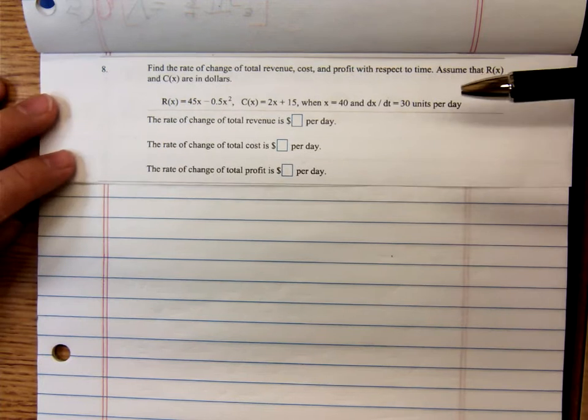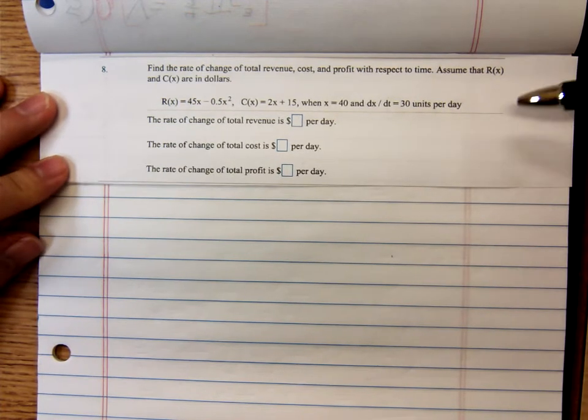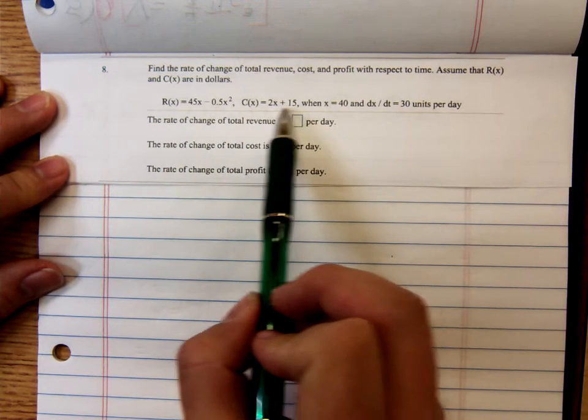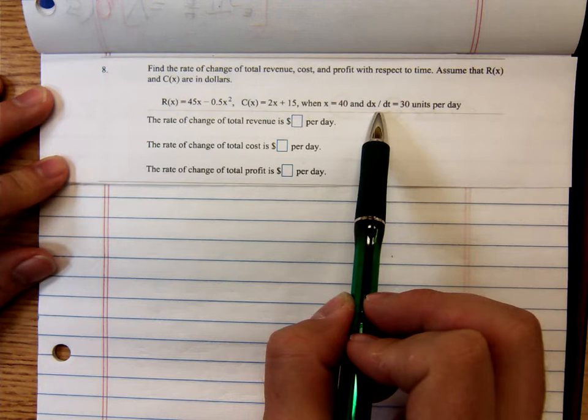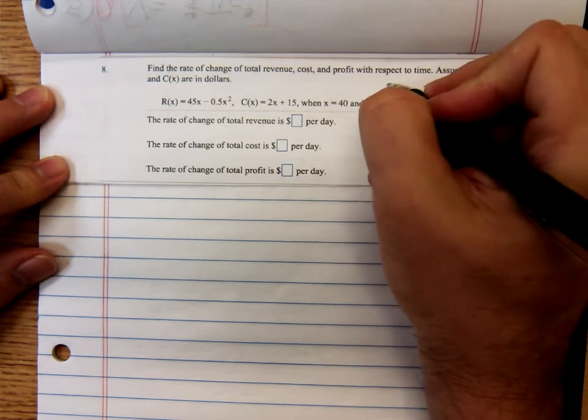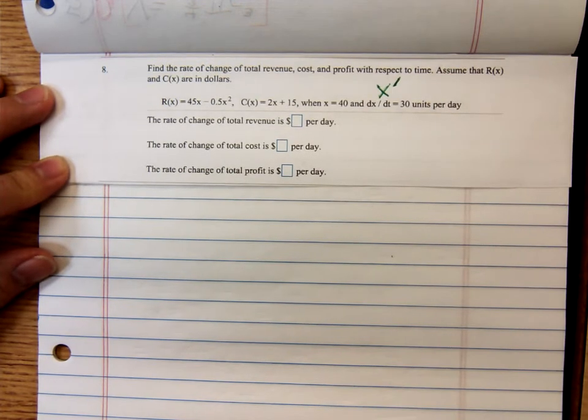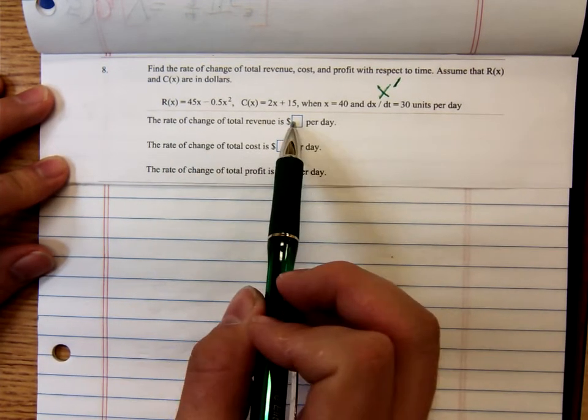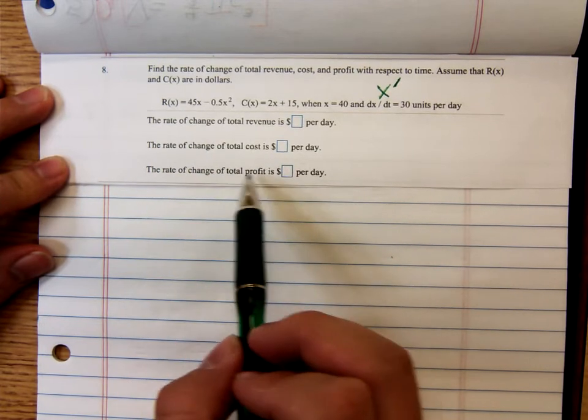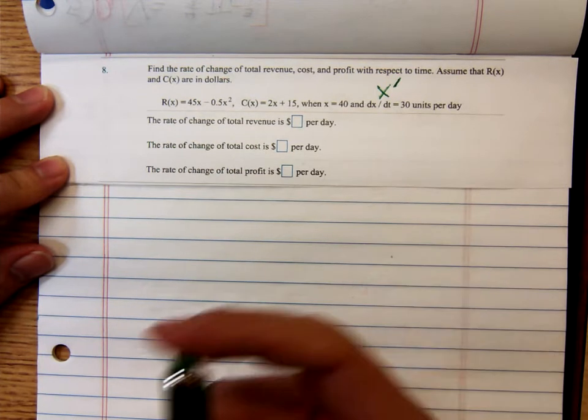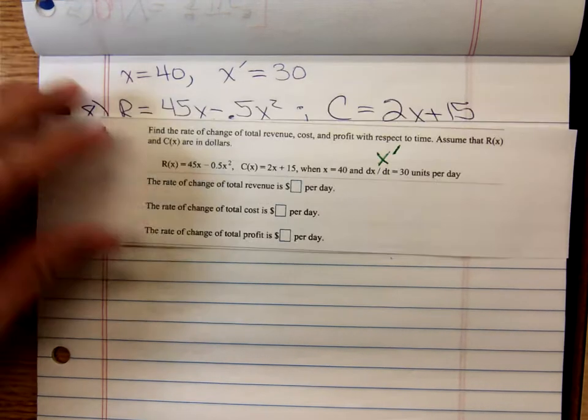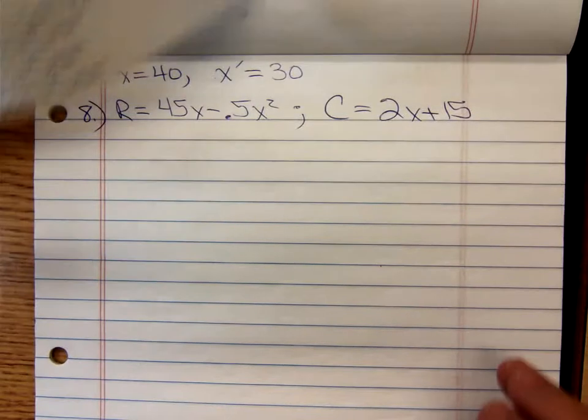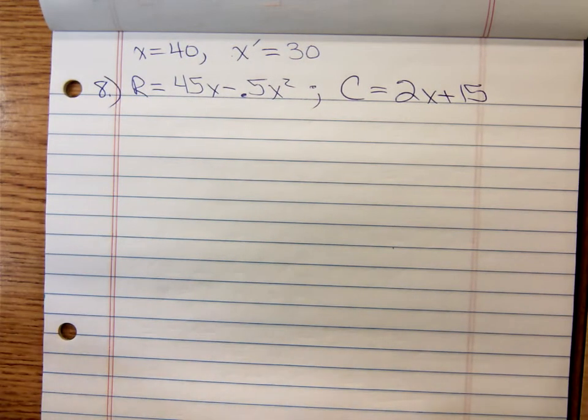This one says to find the rate of change of total revenue, cost, and profit with respect to time. Assume that R of X and C of X are in dollars. They give us the revenue function, they give us the cost function, and they also give us a value for X and a rate of change of X. Remember that DXDT I refer to just as X prime. So here I've written the pertinent information down.